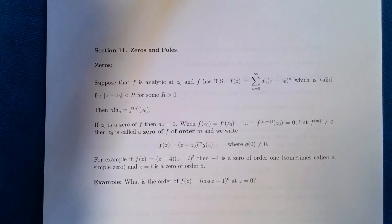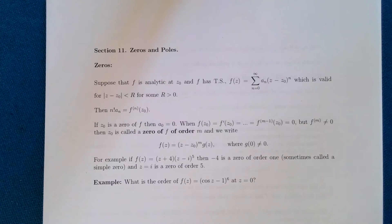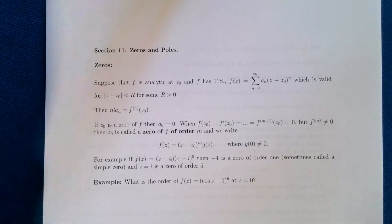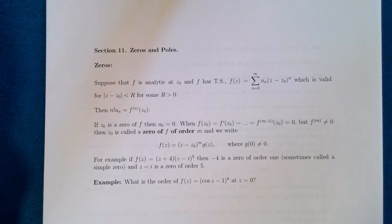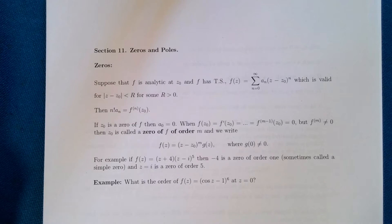Welcome to our journey into complex analysis — we're in Section 11 on zeros and poles. In previous sections we've seen that we can use Laurent series to evaluate integrals, but we're really only interested in extracting the residue. It would be nice to extract residues without calculating full Laurent series, especially with multiple singularities. To do that, we'll introduce zeros and poles.